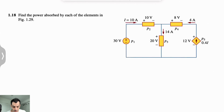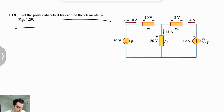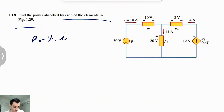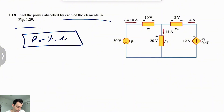Alright guys, we have question 18 from the fundamentals of electric circuits and we need to find the power absorbed by each of the elements in this figure on the right hand side. As we talked about in the previous videos, our power would be voltage times current and for each of these elements we need to find this value.